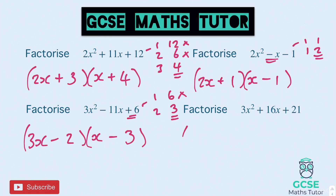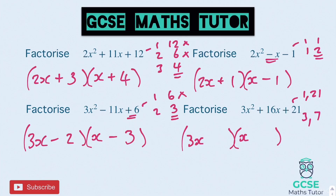Onto the last one: 3x squared, so we've got 3x and x. Factors of 21: 1 and 21, or 3 and 7. I'm definitely not going to make 16 tripling 21, and tripling 1 makes 3 — I can make 18 but not 16 — so it's not that one. It must be the 3 and the 7. Which one do I want to triple? Triple 3 to make 9 plus 7 — that makes 16! So we want the 3 to triple: stick the 3 in here and the 7 in there. It's all positives, so that's quite nice and easy — and there's those quadratics factorised.